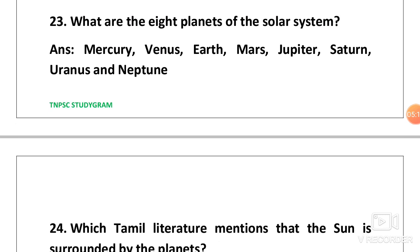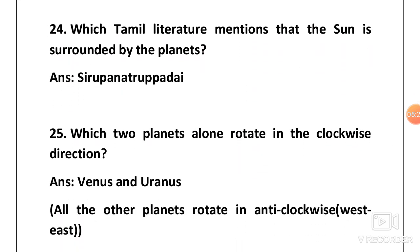Next one, what are the 8 planets of the solar system? Mercury, Venus, Earth, Mars, Jupiter, Saturn, Uranus and Neptune. You all know this. Don't add Pluto again.